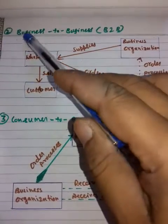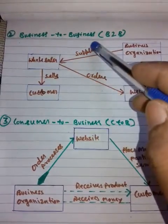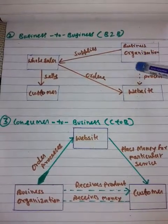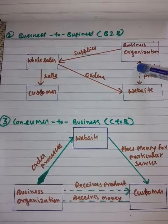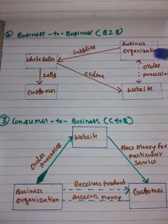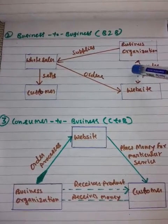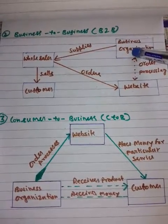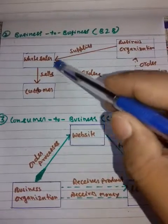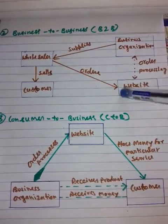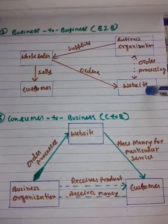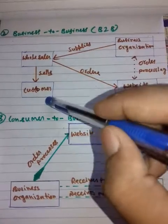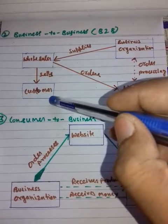The second model is Business to Business, also known as B2B. In the B2B e-commerce environment, companies sell their online goods to other companies. A business organization supplies to a wholesaler; the wholesaler orders on the website, then the business organization supplies goods to the wholesalers, who then sell to the customers.